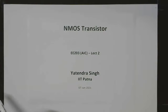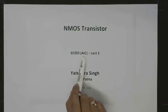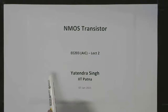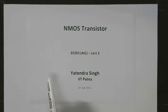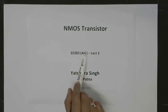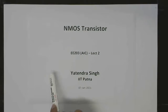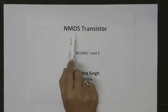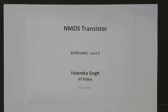This is Lecture 2 of the course on Analog Integrated Circuits. As pointed out in the last lecture, almost all circuits discussed in this course will be of CMOS nature. CMOS technology has two different types of transistors: NMOS and PMOS. Of those, NMOS is more commonly encountered in analog applications.